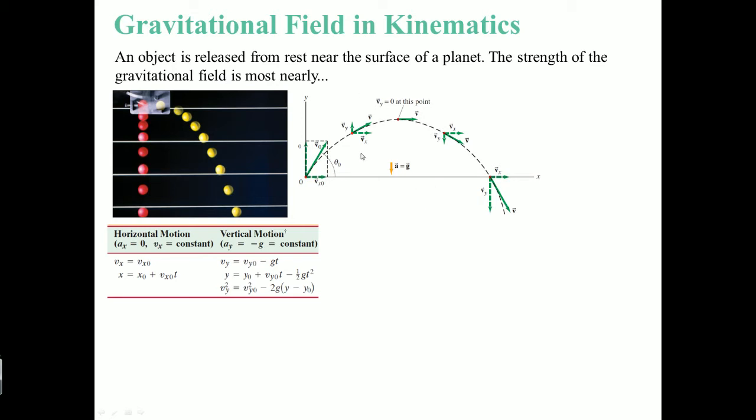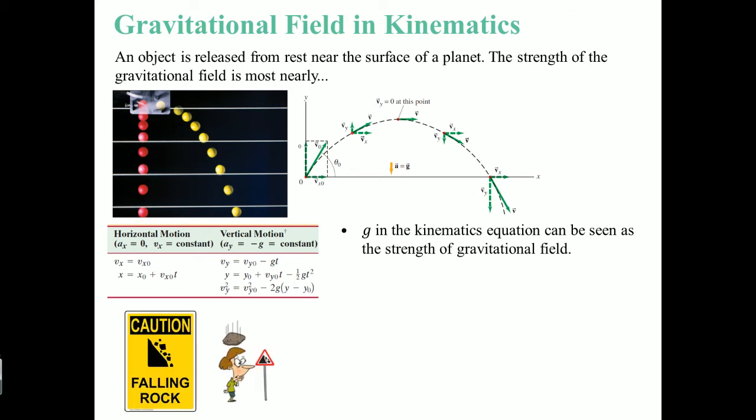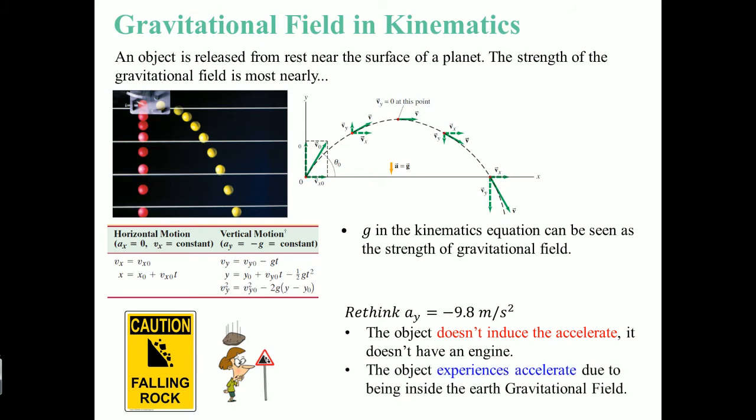You need to rethink what that 9.8 in the kinematics equation can now be seen as. The 9.8, which is the acceleration of the ball, the rock that's not going at 9.8 meters per second, it doesn't have an engine, it can't accelerate, there's no thrust. What it is actually experiencing 9.8, it's moving 9.8 meters per second because it's inside Earth's gravitational field.